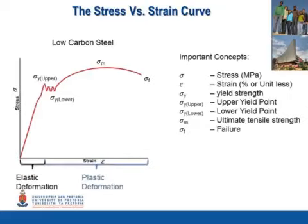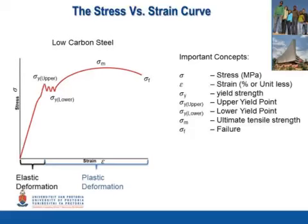Important points on all stress-strain curves are indicated on the graph. Sigma Y is the yield point and the point of transition from elastic deformation to plastic deformation. This graph is specific to low carbon steel and a clear yield point can be observed. In the stress-strain curve for brass, a special point is used, known as the sigma 0.2% stress, or proof strength. This is used to generate a theoretical yield point for materials that do not show a clear yield point.